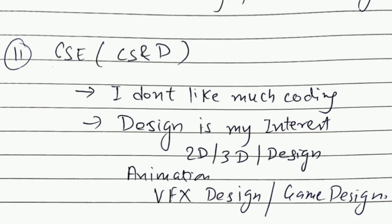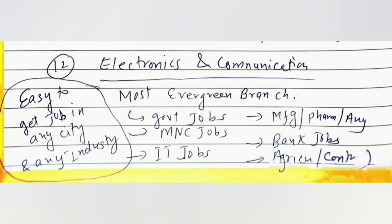Next is Computer Science and Design, which is for students who don't like coding much but are good at and interested in designing — 2D and 3D design, animation, VFX, game designing. For students who love drawing and design, there is a big potential and a big industry. Movies like Baahubali are examples of this growing space. This branch should be taken by students who want jobs in design, not in coding, as the coding component here is lesser.